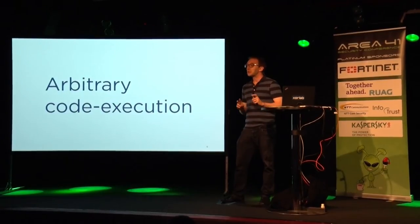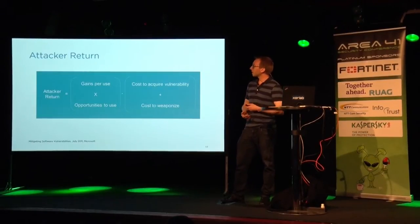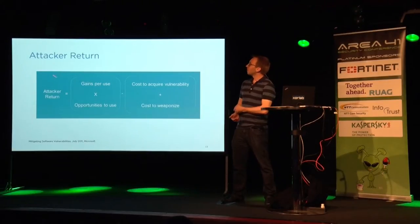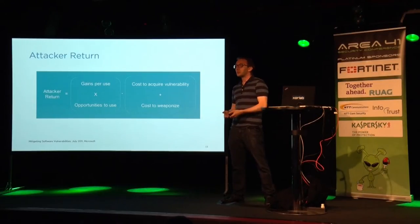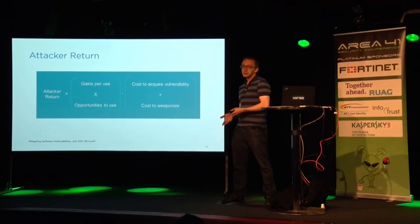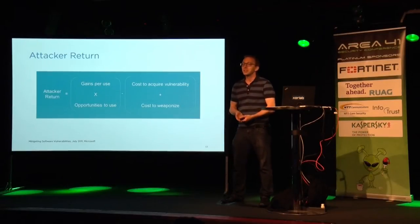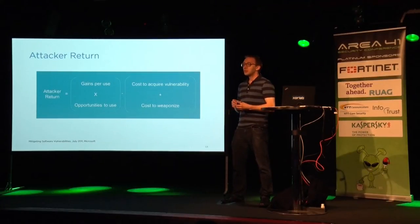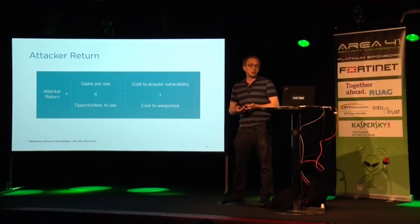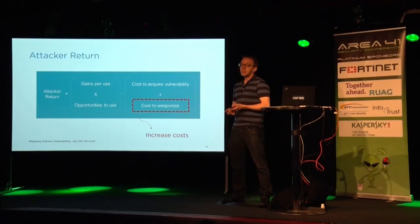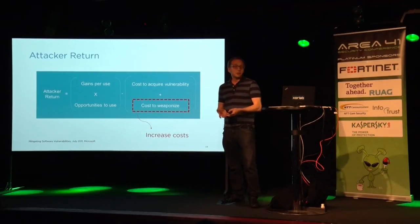So attackers could execute arbitrary code. As an attacker, before you do the attacking, you do some basic math. According to Microsoft, your attacker returns — the money you actually get — is calculated by the gains per use: how much money can you steal with an attack times the number of thefts. But of course you have some costs — initial costs to acquire a vulnerability, maybe through fuzzing or static/dynamic analysis — and you need to subtract the costs of weaponizing the vulnerability. This is exactly the point where we, as defenders, try to raise the costs of an attack.